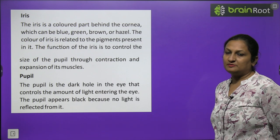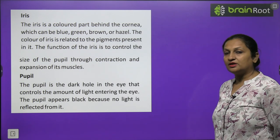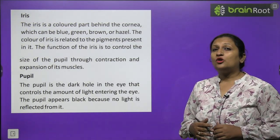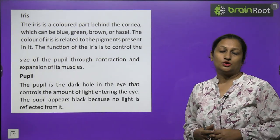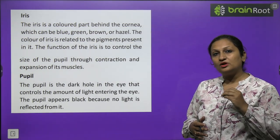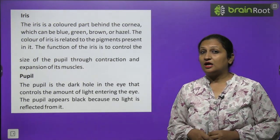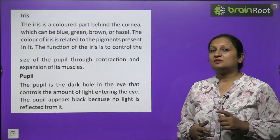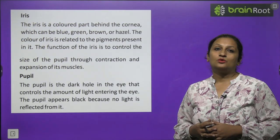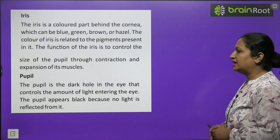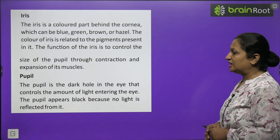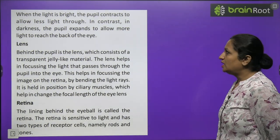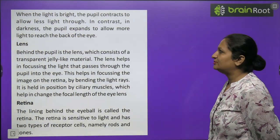The function of the iris is to control the size of the pupil through contraction and expansion of its muscles. The pupil is a small aperture through which light rays enter the eyes. In bright sunlight, the pupil contracts to allow less light in so it doesn't damage the eye. In dim light, the pupil dilates (expands) to allow more light to reach the back of the eyes. The pupil appears black because no light is reflected from it.